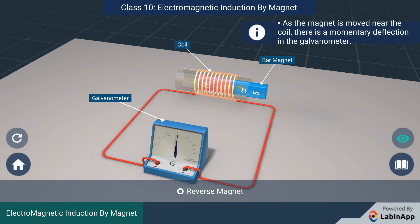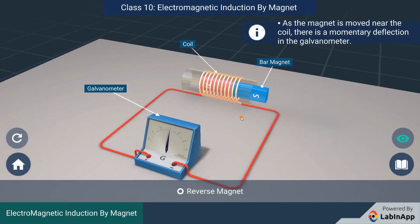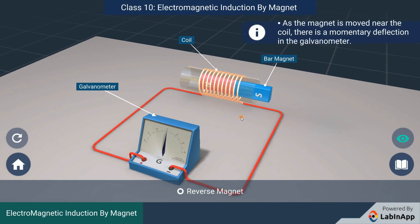The deflection of the galvanometer indicates that there is some current flowing through the coil. The galvanometer deflects only when the magnet is in motion near the coil.